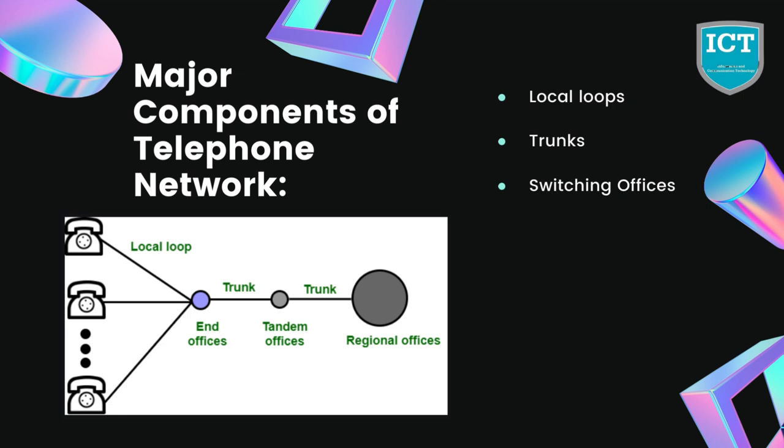Now let us talk about switching offices. As there is no permanent physical link between any two subscribers, to avoid this the telephone company uses switches that are located in switching offices. The switch is able to connect various loops or trunks and allow a connection between different subscribers.